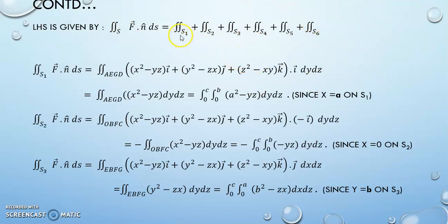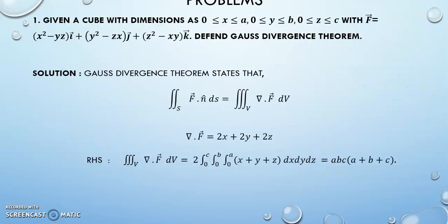So, what will I do? For each and every surface, I will calculate the surface integral. And finally, I got to add up everything so that I get my left hand side. What should I get for my left hand side? The answer, what I got in the previous slide, abc(a + b + c).